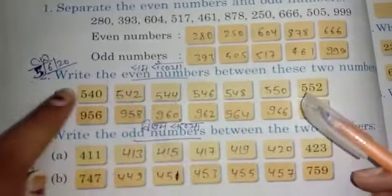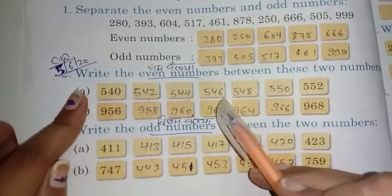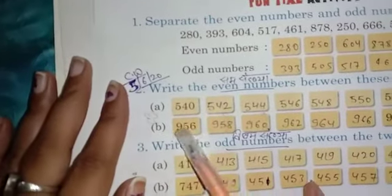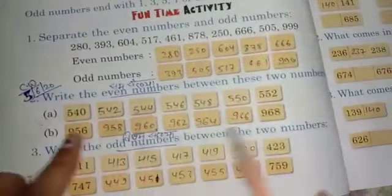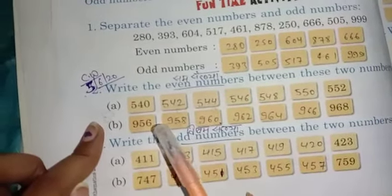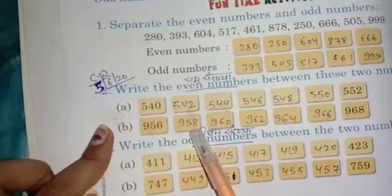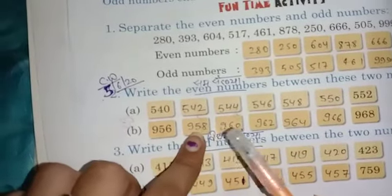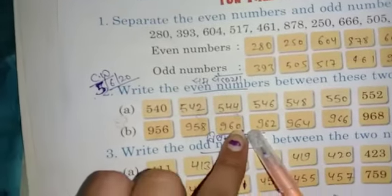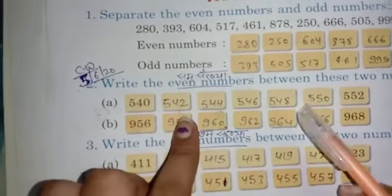Between 956 and 968 we have to write all the numbers. After 956 comes 957, you might write this but the 7 which is in the ones place does not come in the 2 times table. So 958, then after 958, 959 will not be included, 960, after 960, 961 will not be included so we'll write 962, then after 962 you might think 963 will come, but students that also won't be included because that 3 does not come in the 2 times table. So 964.